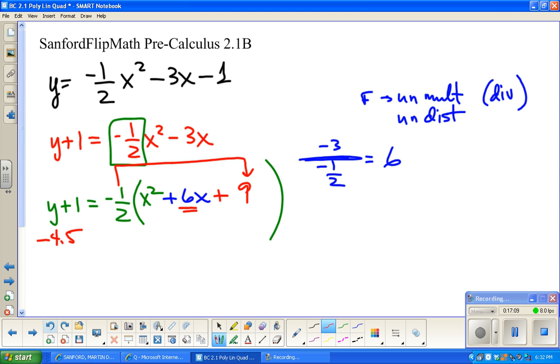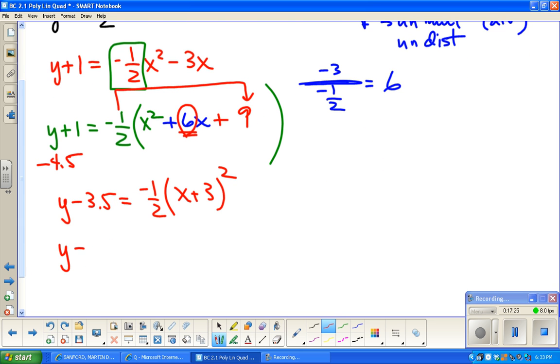So y - 3.5. All I'm doing is combining like terms and factoring. Remember that when you factor, it's the half of b. And last thing, get y by itself. y = -1/2(x+3)² + 3.5.